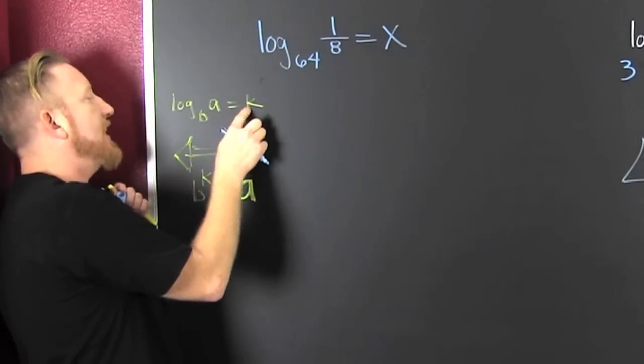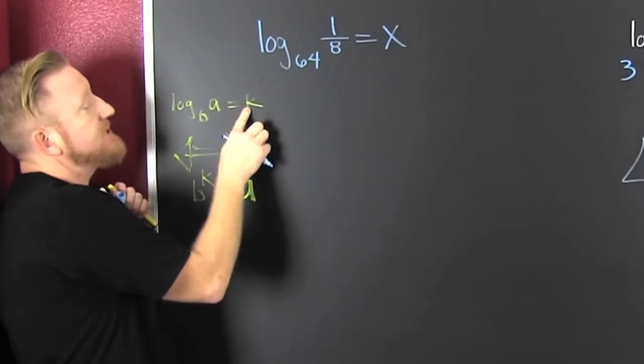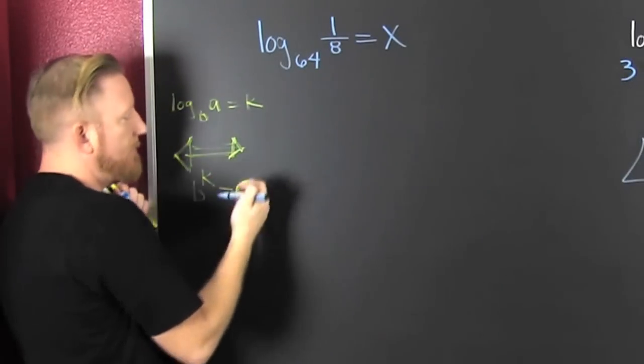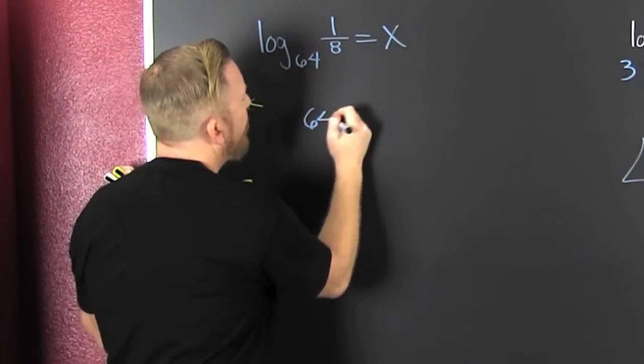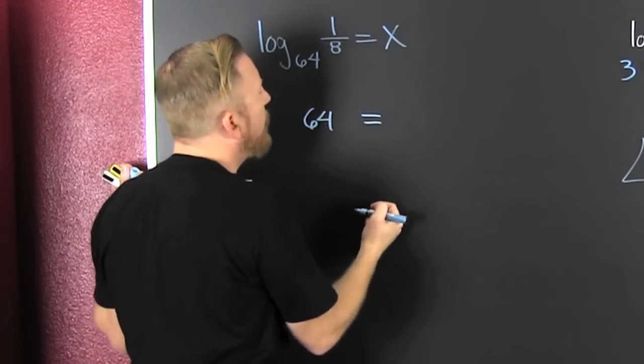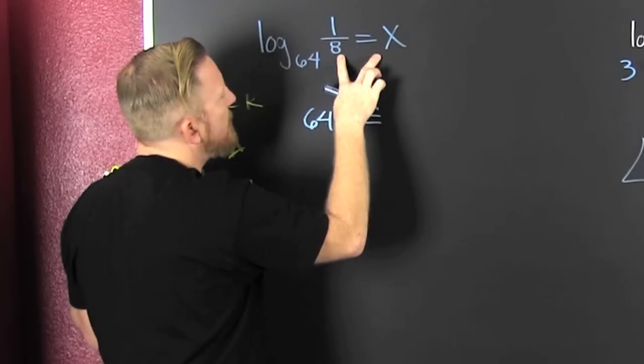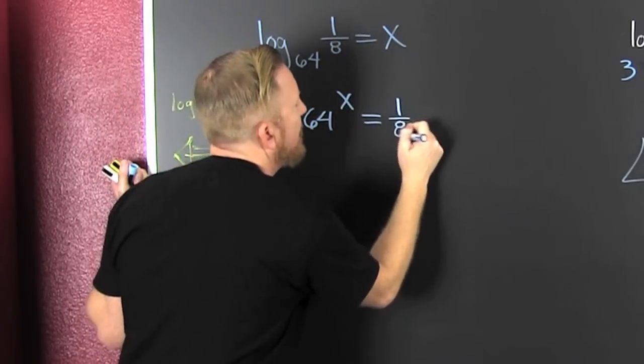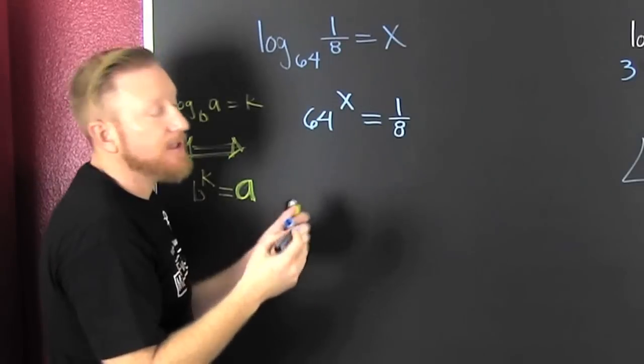If I got log base b of a to the k, that's the same as b to the k is a. What am I talking about? Over here I have 64. Wait for it. Those are equivalent equations.